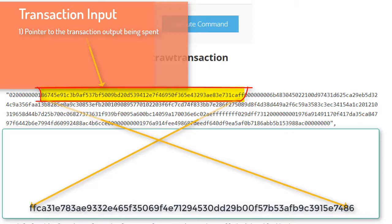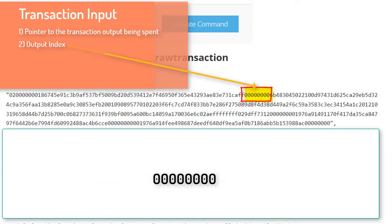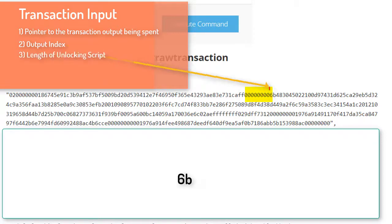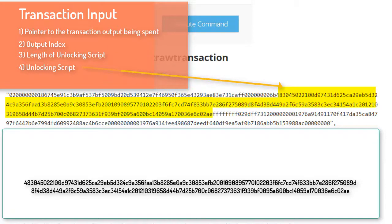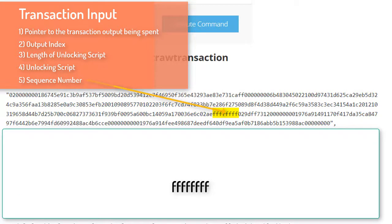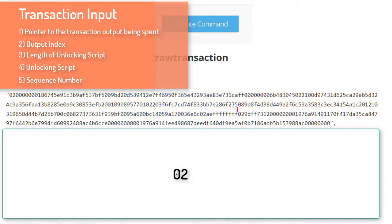The next four bytes are the output index. As we discussed, a transaction ID alone is not sufficient because a transaction can have more than one output, so you need the output index number to point to the exact transaction output. The next one byte gives you the length of the unlocking script — in this case it is '6b', which is 107 in decimal, meaning the next 107 bytes are the unlocking script. The remaining four bytes are the sequence number. We won't worry about the sequence number for now as it hasn't been covered yet. This whole thing constitutes the input transaction.